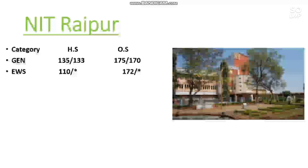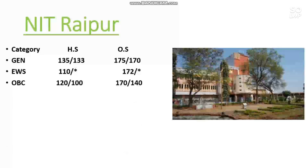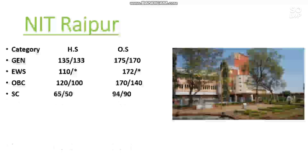From here I will discuss other state cutoffs — male — and you can check the other state female and home state male/female cutoffs side-wise. Wherever you see a star mark, that means that category is not reserved in that particular NIT. For EWS, 172 marks are needed for other state male; for OBC, 170 marks; for SC, 94 marks; and for ST, 95 marks.